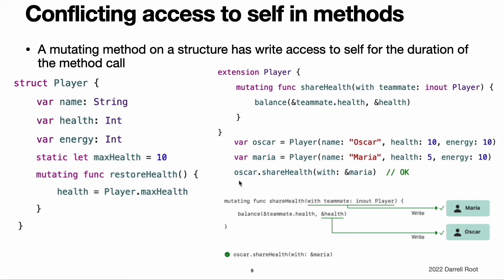In this example, calling the shareHealth method for Oscar's player to share health with Maria's player does not cause a conflict. There is a write access to Oscar during the method call because Oscar is the value of self in a mutating method, and there's a write access to Maria for the same duration because Maria was passed as an in-out parameter. As shown in this figure, they access different locations in memory. Even though the two write accesses overlap in time, they do not cause a conflict.